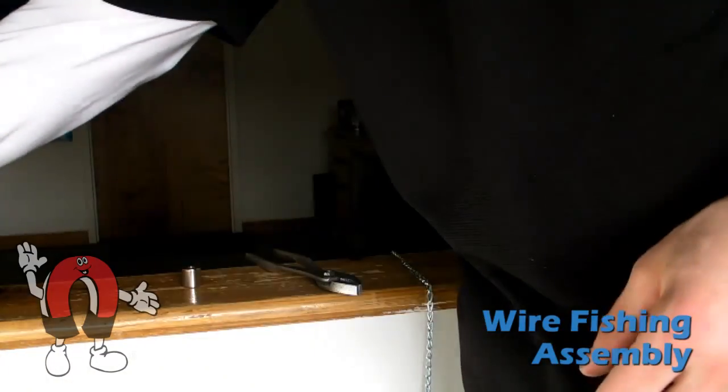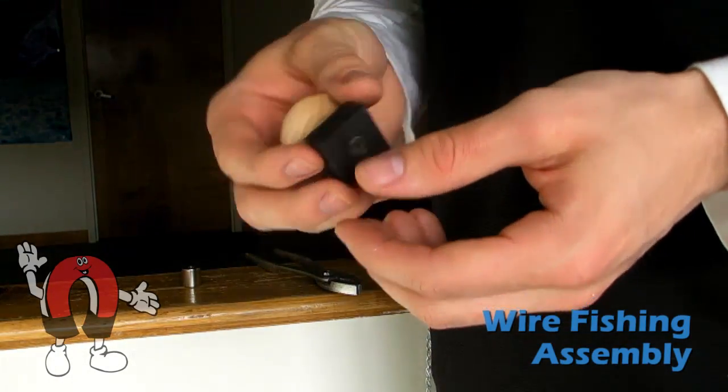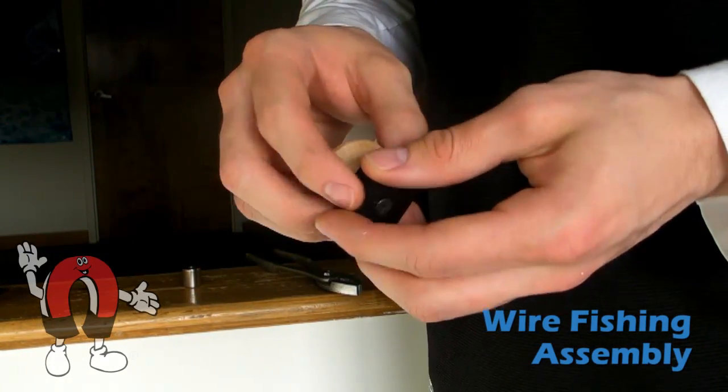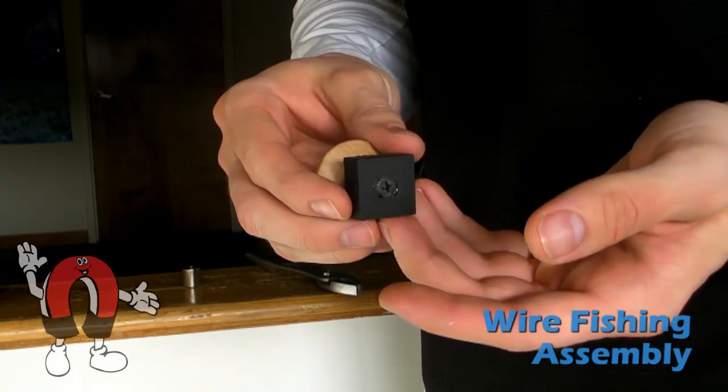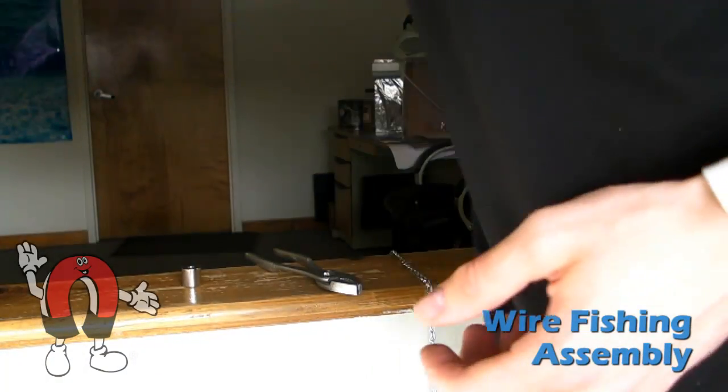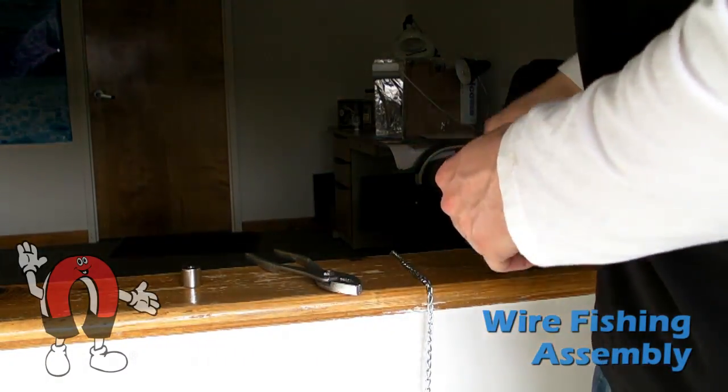We chose to use a countersunk block magnet, that way we could attach a nice handle to it. Also, this magnet has a plastic coating which will help the magnet slide along the drywall easily and won't leave marks on the drywall.